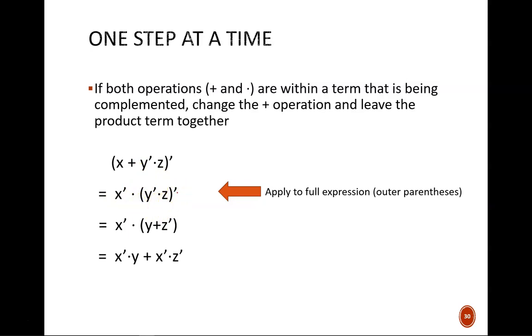Also, the OR becomes an AND. Now I apply DeMorgan's Theorem again to this Y prime Z term. Bring down the prime and change the AND operator to OR.